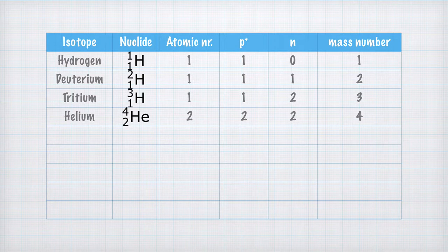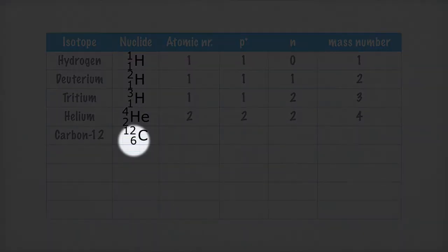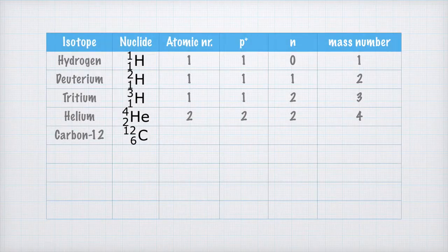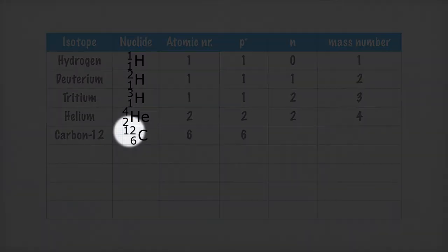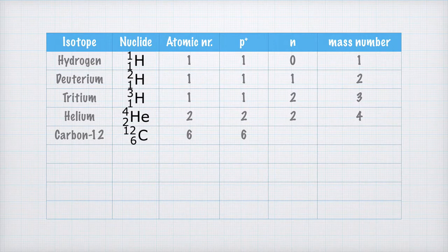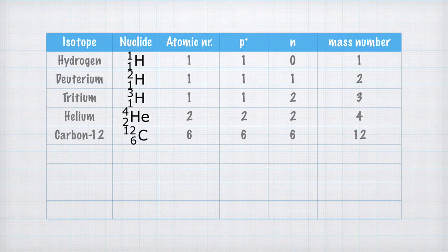Now let's look at a somewhat bigger isotope. We turn our attention to carbon-12. The atomic number is 6. This means that there are also 6 protons in the nucleus. But what is the number of neutrons? The mass number is 12, which means that the number of neutrons is 12 minus 6, which is equal to 6 neutrons. And we check that 6 plus 6 equals 12, the mass number.